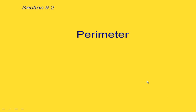This video is for section 9.2 on perimeter and also for section 9.3 on area, volume, and surface area. So first we'll talk about perimeter.